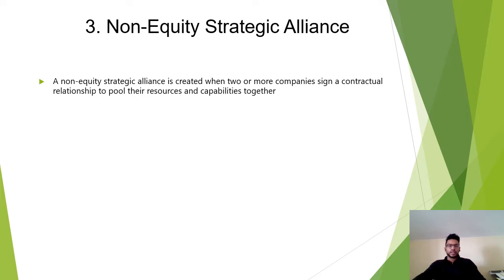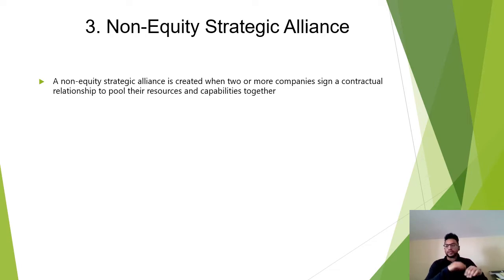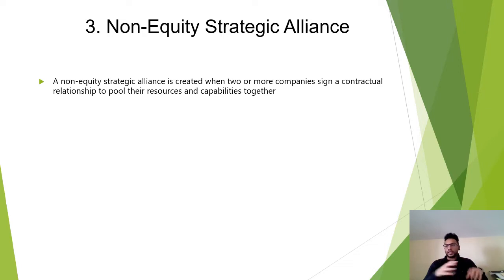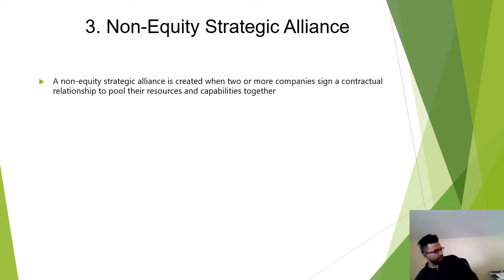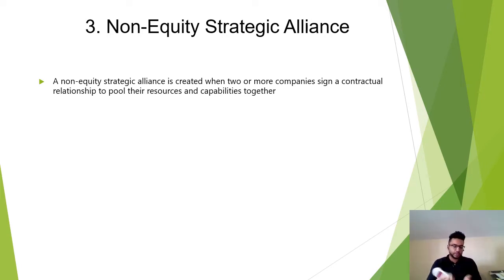A non-equity strategic alliance is an alliance created when two or more companies sign a contractual relationship to pool their resources and capabilities together. There's no exchange of money or equity — they simply agree to work together to reach a certain goal. So to summarize: a joint venture creates a new company, an equity alliance involves buying shares, and a non-equity alliance is purely a contractual agreement.